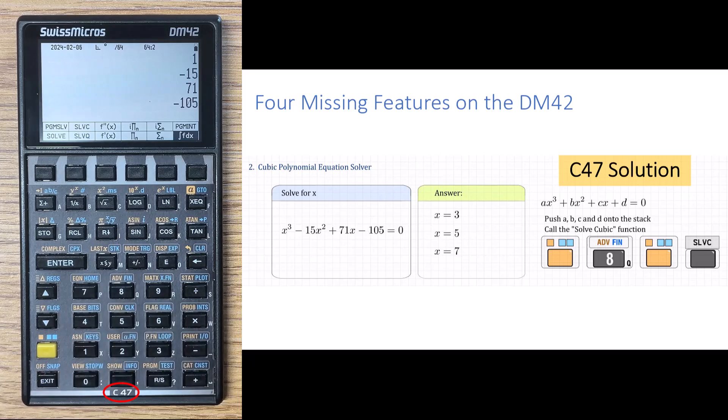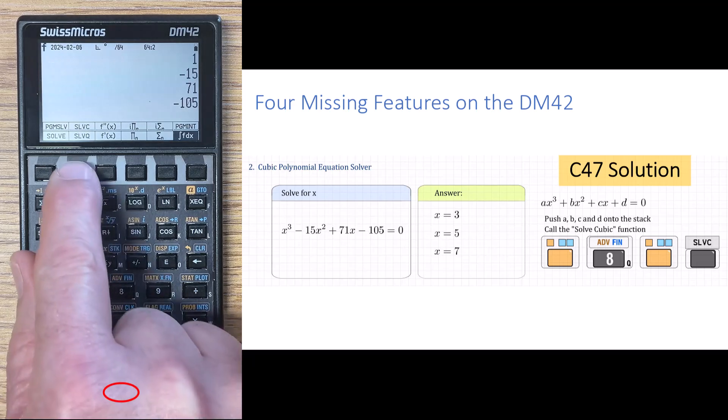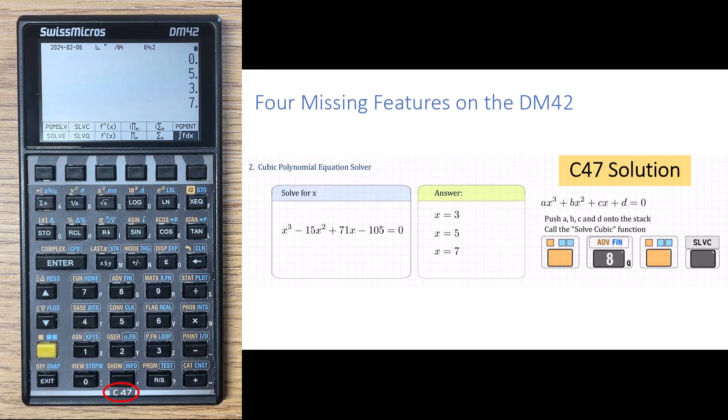Again, under the advanced menu, and this time it's a shift on the F2 key, solve cubic polynomial, and we get the answer, 3, 5, and 7. So let's return back to the home menu, clear the stack.